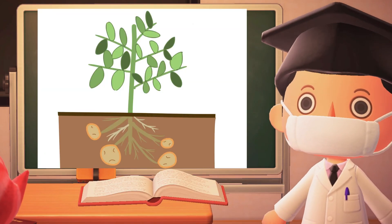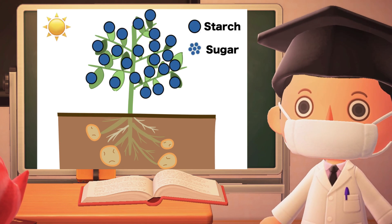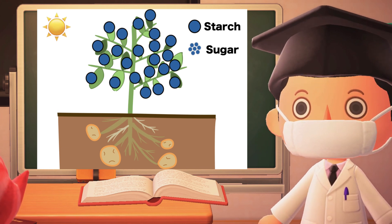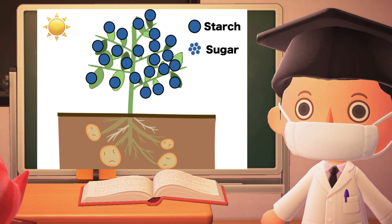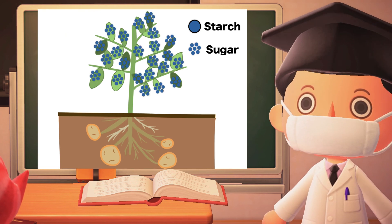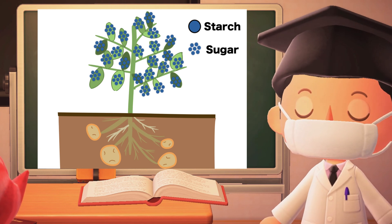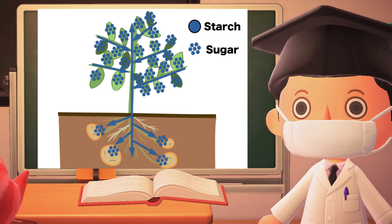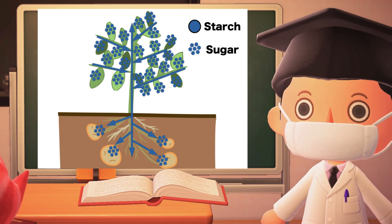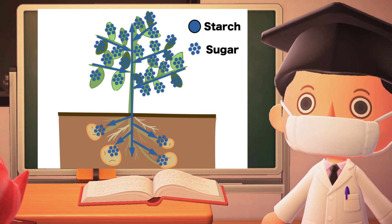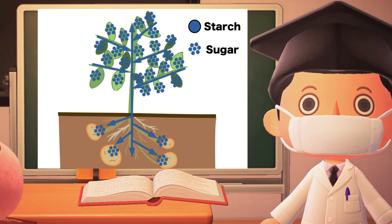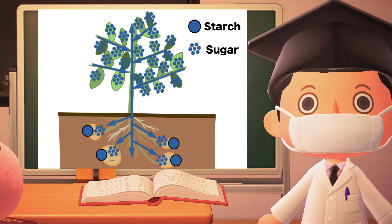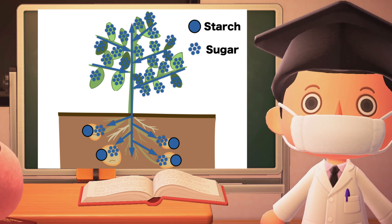Starch is transported and used throughout the plant's body as a nutrient for growth. However, starch cannot move through the plant's body in its original form. Therefore, it is changed into sugar that dissolves in water at night, and is carried through the wood to each part of the plant's body. That is why the iodine solution does not react when examining the stem — the starch has become sugar. Sugar is carried to various parts of the body, used as a nutrient for growth, and is also converted back into starch and stored in fruits, seeds, and potatoes.